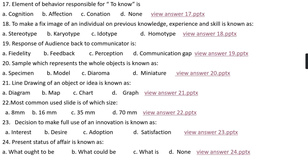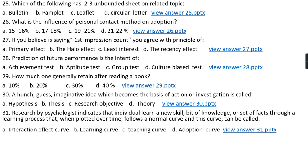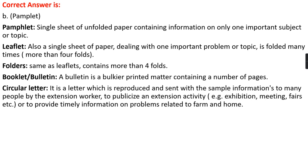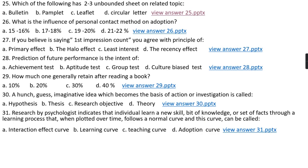Question number twenty-five: Which of the following has two or three unbound sheets on related topics? Option A, bulletin; option B, pamphlet; option C, leaflet; option D, circular letter. The right answer is option B, that is pamphlet. A pamphlet is a single sheet of unfolded paper containing information on only one subject. A leaflet is also a single sheet of paper dealing with one important problem but folded many times. A folder is similar to a leaflet but contains more than fourfold. A bulletin is a bulkier printed matter containing a number of pages. A circular letter is a letter reproduced and sent with the same information to many people by the extension worker to publicize extension activities like exhibitions, meetings, and fairs, or to provide timely information on farm and home-related problems.